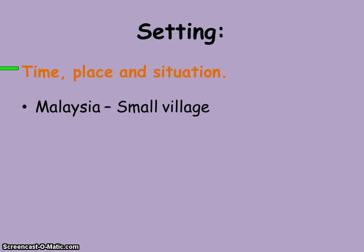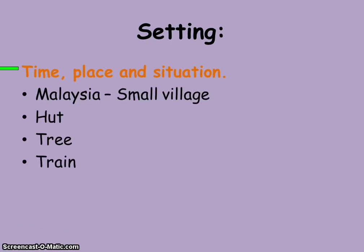So, setting — time, place and situation. The story is set in a small village in Malaysia and we know that they are quite poor. He sleeps on a mat in a hut that has a thatched roof, and there are holes in the roof through which he can see the sky — that's probably why he's looking at the stars and being fascinated. The tree is quite important; its vines seem to wrap around everything. We've also put the train here because at the end of the story the young boy is on the train saying goodbye to his father.